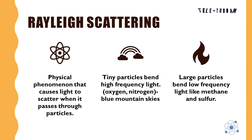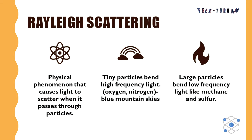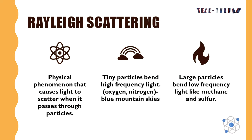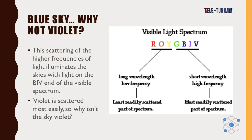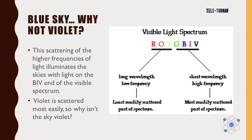Another reason is Rayleigh scattering — a physical phenomenon that causes light to scatter when it passes through particles. Tiny particles bend high-frequency light; oxygen and nitrogen reflect blue mountain skies. Large particles bend low-frequency light, like methane and sulfur. This scattering of the higher frequencies of light illuminates the skies with light on the blue-indigo-violet end of the visible spectrum.